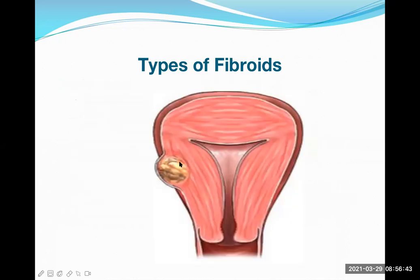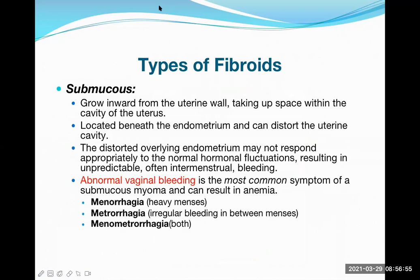This picture shows a subserosal myoma — right below the serosa, growing outwards. The third type is submucosal, right below the endometrium. It grows inward from the uterine wall, taking up space within the cavity of the uterus, making the endometrial lumen narrow. This can cause problems during pregnancy.